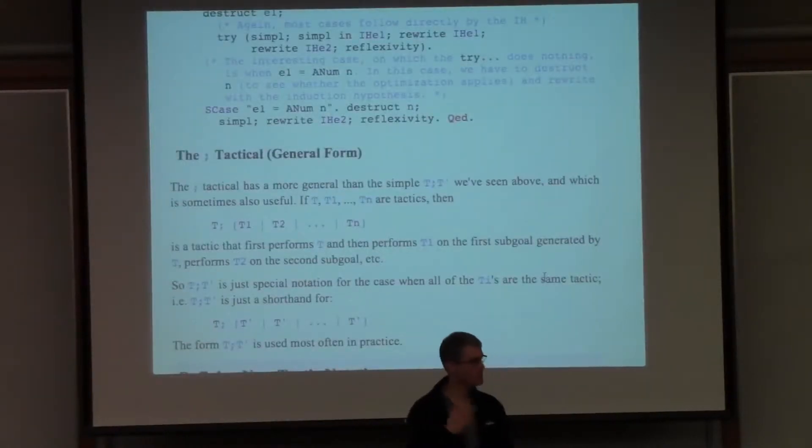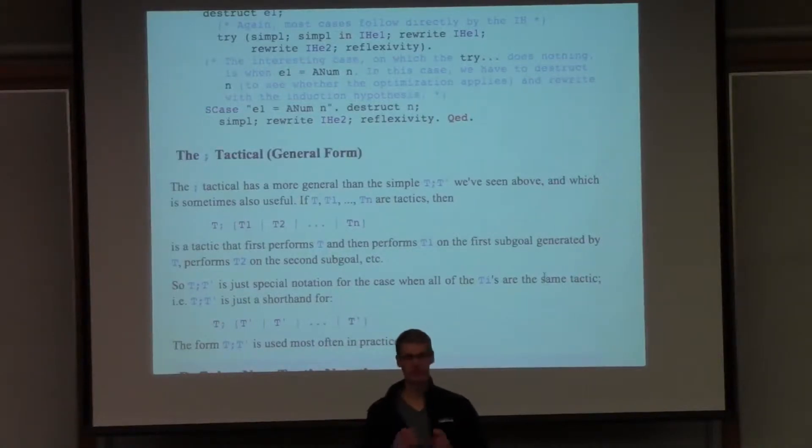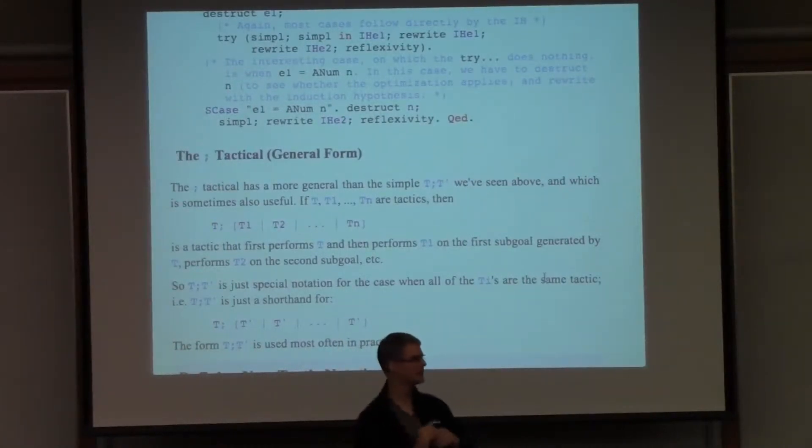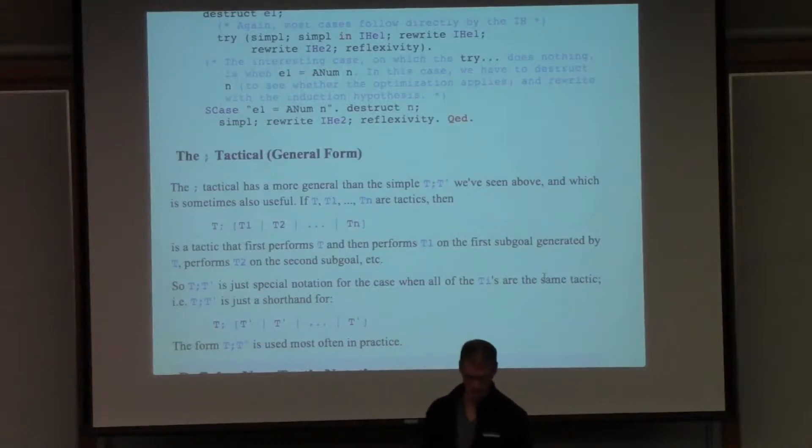There is a more general form of semicolon where instead of the thing after the semicolon being applied to every subgoal, you give a different thing that happens to each different subgoal. There it is for the sake of reference, but it isn't actually used all that much. The simple semicolon form is the usual one.